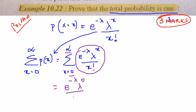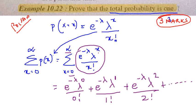Now in place of x I write 1 by 1 factorial, plus e^(-λ) λ^2 by 2 factorial. Obviously I cannot go on until infinity so I am saying dot dot dot.